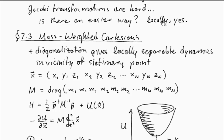In the last lecture, we concluded that Jacobi transformations are hard, and we decided to look for an easier way to get a coordinate system with locally separable dynamics.